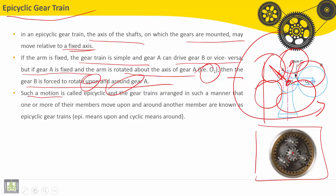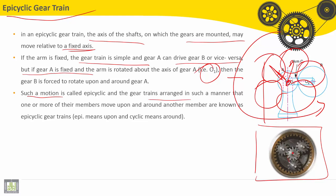Such a motion is called epicyclic, and the gear trains arranged in such a manner that one or more of their members move upon and around another member are known as epicyclic gear trains. Epi means upon and cyclic means around.